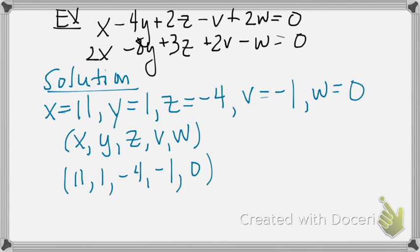So what would the solution to this system look like? If we have x equal to 11, y equal to 1, z equal to negative 4, v equal to negative 1, and w equal to zero, sometimes written in the parenthetical form of x, y, z, v, w as listed here.